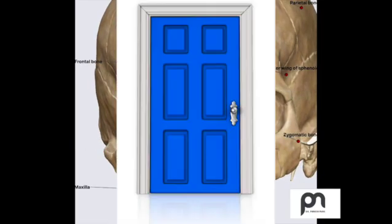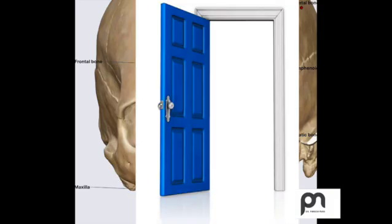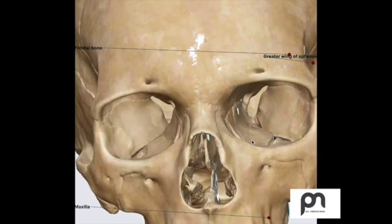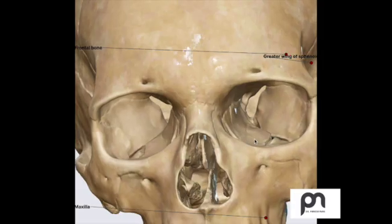The inferior orbital fissure is a very fascinating topic. The nose forms a common corridor to many areas, one of them being the eye. Let's explore in detail. This intriguing anatomical structure plays a crucial role in our vision and facial sensation.